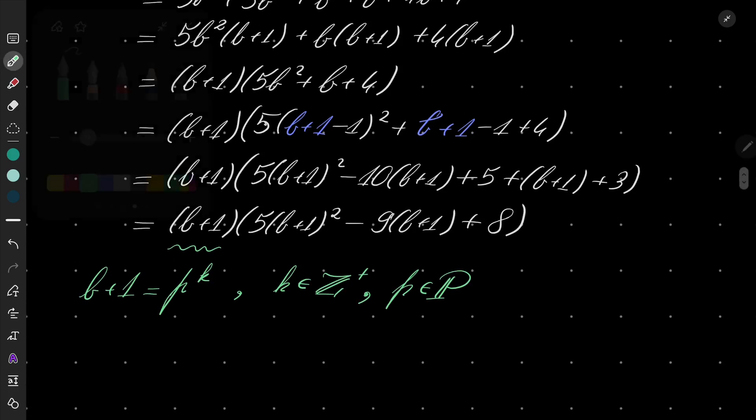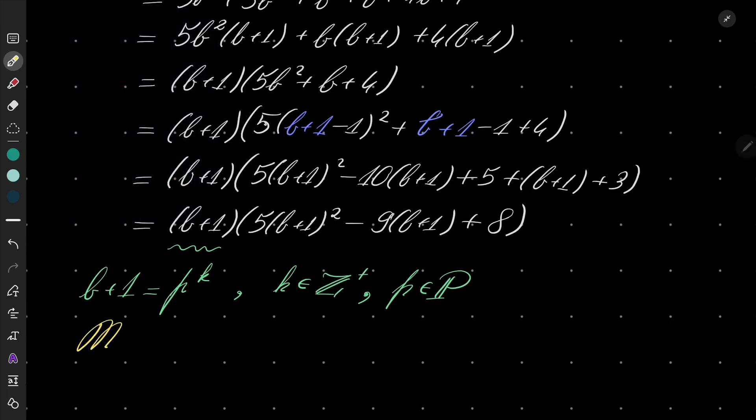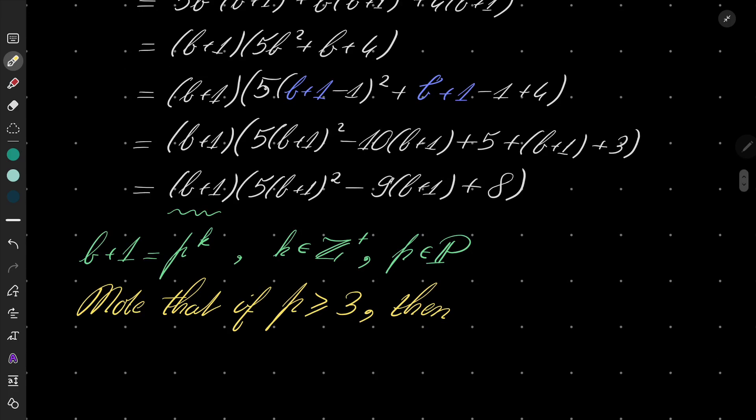No, it can't. Note that if P were to be greater than or equal to 3, then 5(B+1)² is divisible by P, and B+1 is divisible by P, but we will have 8 remaining, and it's a problem because that would mean P divides 8. An odd number cannot divide an even number, which is impossible.